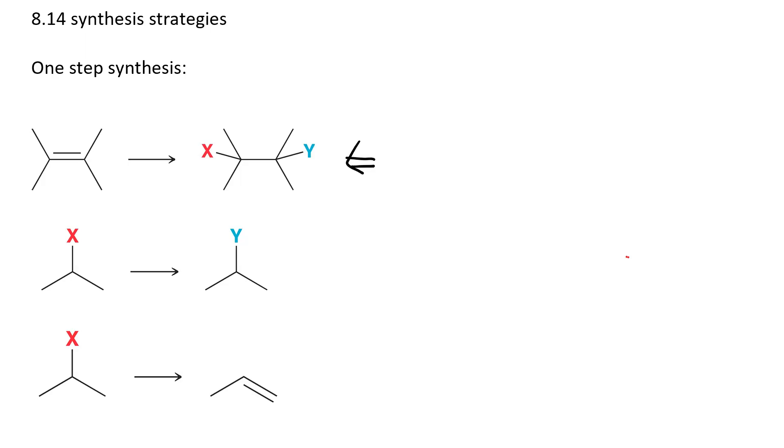In the first one, you add some reagent XY across a double bond to make a disubstituted alkane. This is known as addition. This is what chapter 8 is all about.